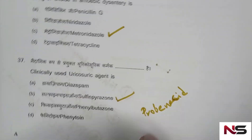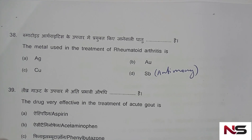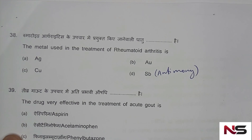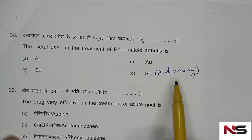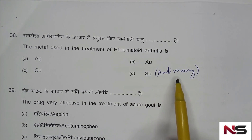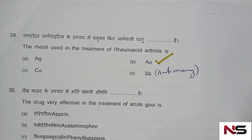Question 38: The metal used in treatment of rheumatoid arthritis. Options are: silver, gold, copper, antimony. The correct answer is option B — gold is used in the treatment of rheumatoid arthritis.